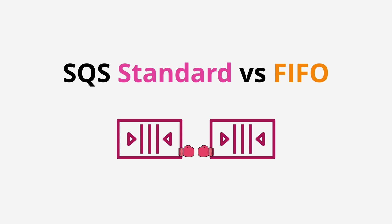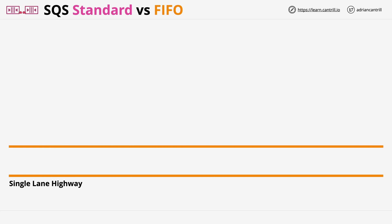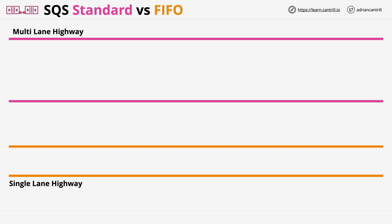Welcome back. In this lesson, I want to quickly step through the differences between standard SQS queues and FIFO SQS queues. To understand some of the architectural differences, think about FIFO queues as single-lane highways, and standard queues as multi-lane highways. Imagine the messages as cars driving along these highways.